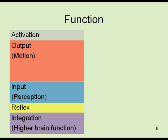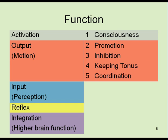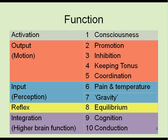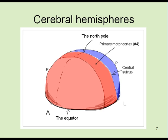Brain has ten functions in five categories. For convenience of explanation, cerebral hemispheres are compared to northern half of the Earth.